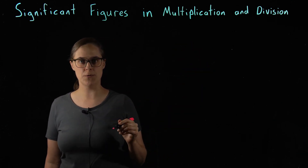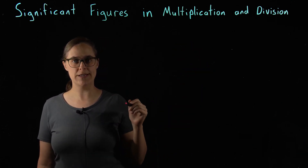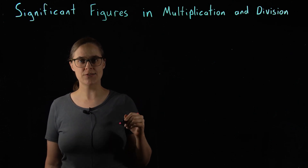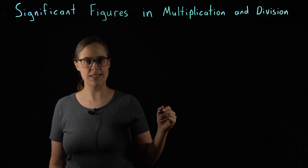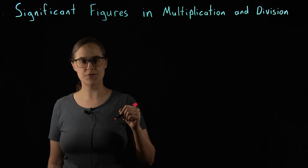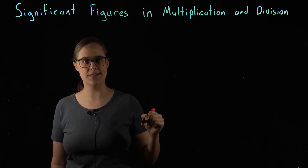Our rule is: in multiplication and division, the answer should have the same number of significant figures as the original number with the fewest significant figures.